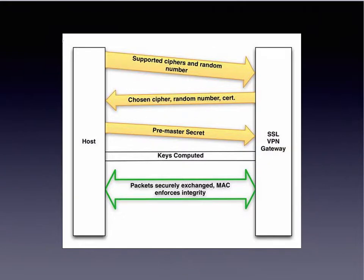This is an example of a handshake for TLS or SSL. The handshake begins when a client connects to a TLS-enabled server requesting a secure connection and presents a list of supported cipher suites, ciphers, and hash functions. From this list, the server picks the most secure cipher and hash function supported by the client and notifies the client of its decision.